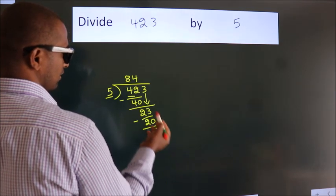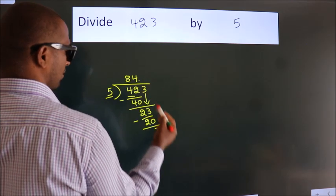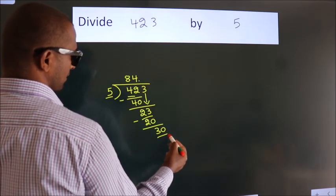After this, no more numbers to bring it down. So what we do is, we put dot take 0. So 30.